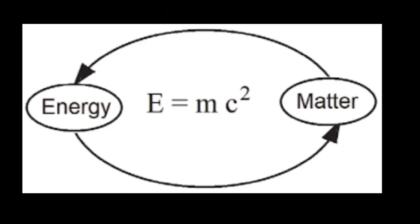This equation reveals that mass and energy are interchangeable — they are different forms of the same thing. A tiny amount of mass can produce an enormous amount of energy, because the speed of light is a colossal number.